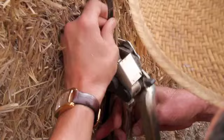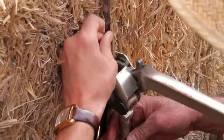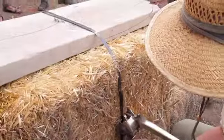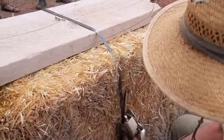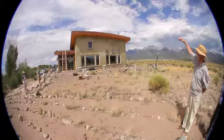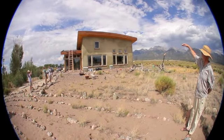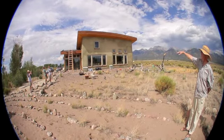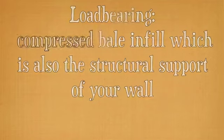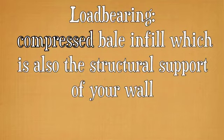Straw bale building means that you're using straw bales to build your walls in order to get a great insulating factor. Very simple to build — they stack one on top of the other and then you coat them with adobe or cement plaster. There are two ways to make a straw bale wall: one is infill and one is load bearing.